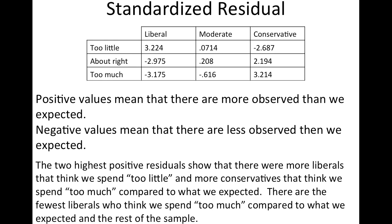In both those cases, we collected a lot more people fitting those categories than we expected to happen. I also talked about the negative: there are the fewest liberals who think we spend too much compared to what we expected. You don't need to cover every single cell — just pick out the highest values. You might not always discuss both a high positive and a high negative; if there's only one extremely high positive, just talk about that. Talk about what's obviously standing out.